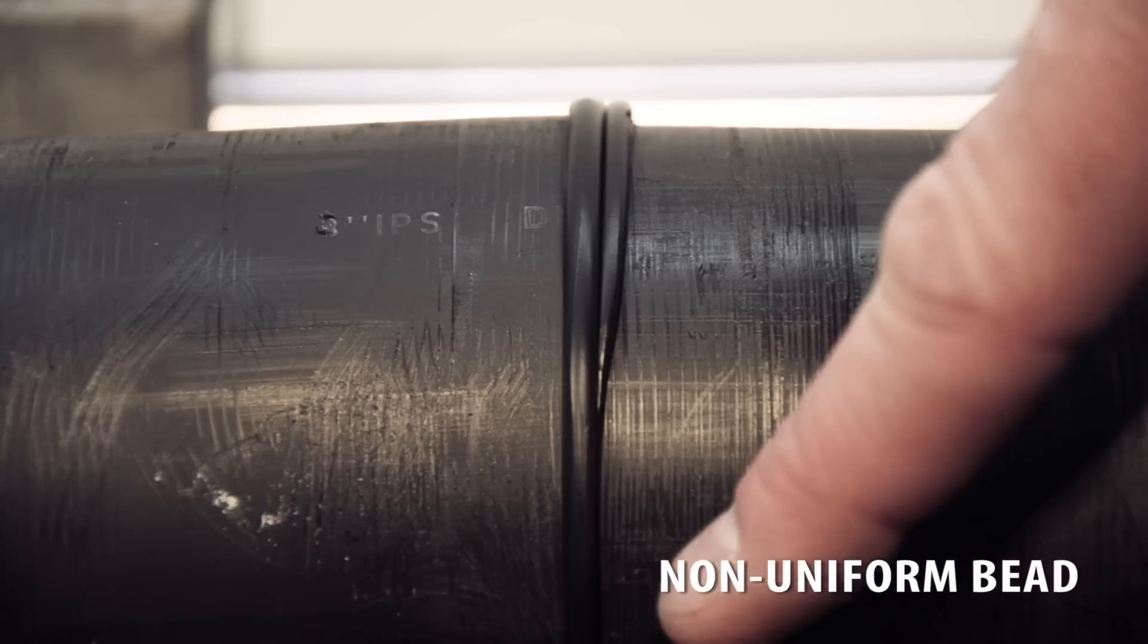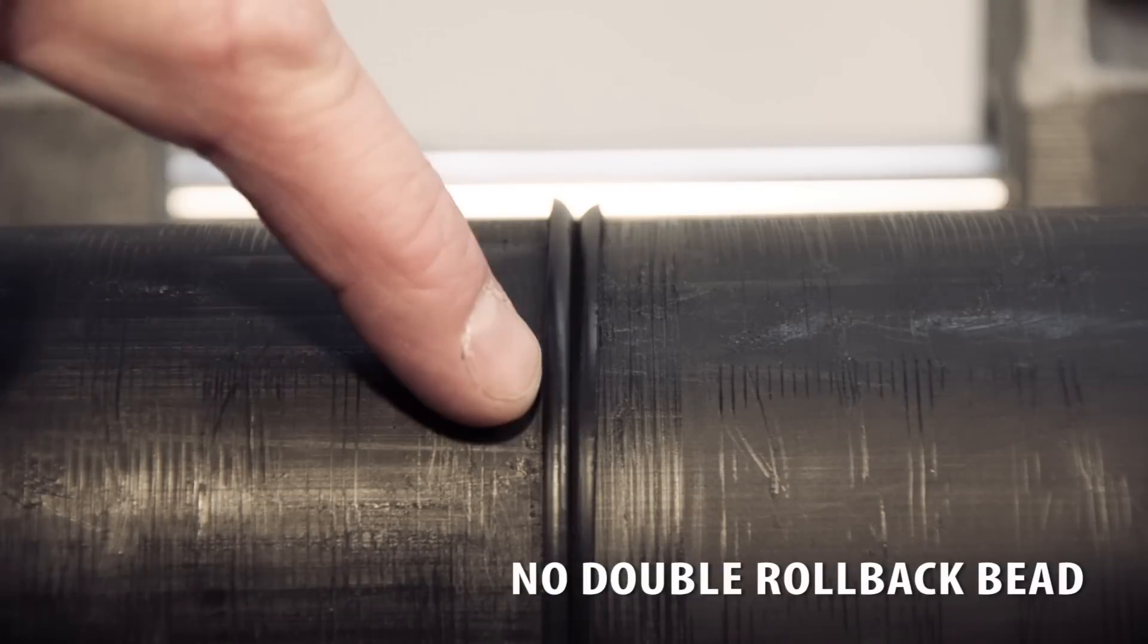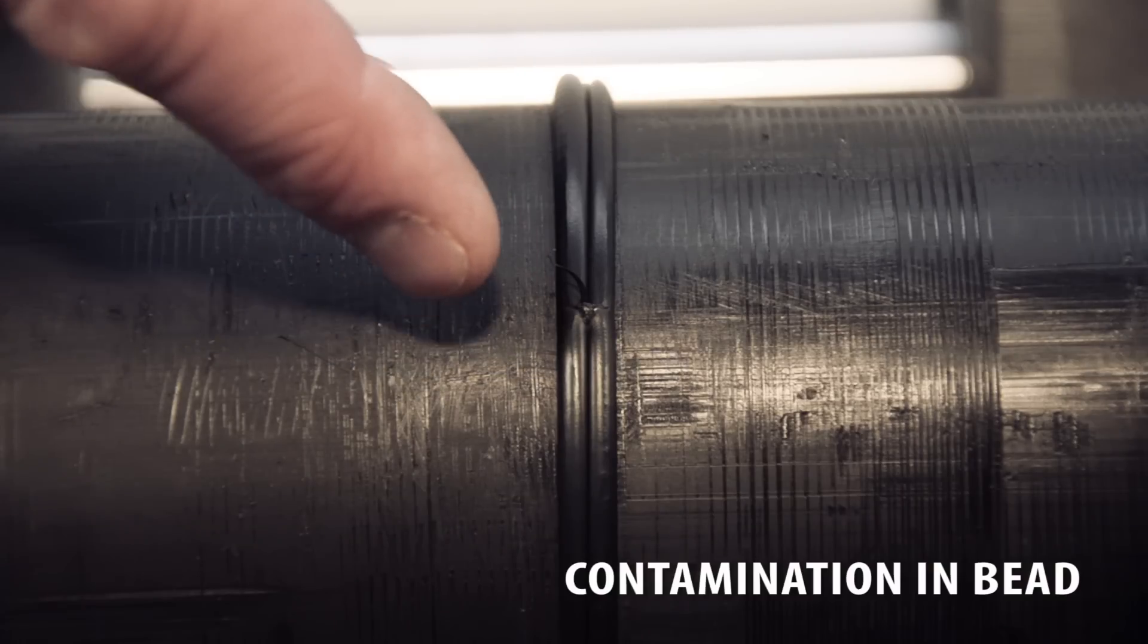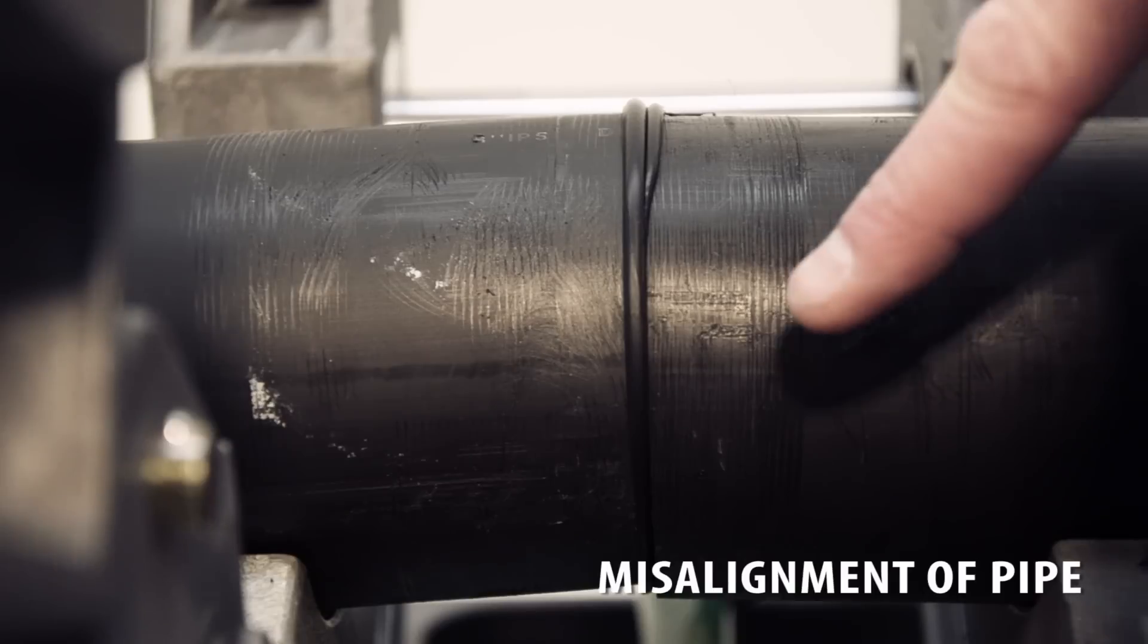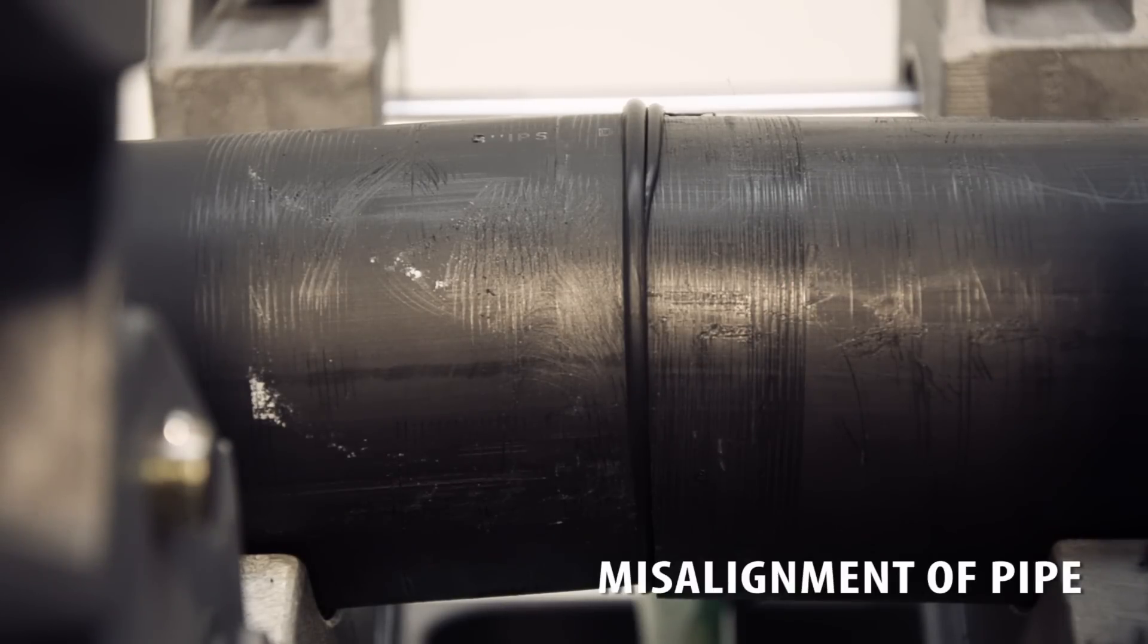This fusion is unacceptable as the bead is not uniform around the circumference of the pipe. This fusion does not have a complete double rollback bead. This bead has contamination in it. This fusion is obviously not straight. This means that the pipe ends were not aligned correctly.